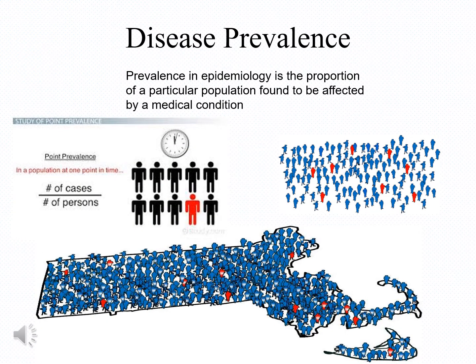I will now change gears and explain some important definitions necessary for you to understand the use of tumor markers. One attribute is called disease prevalence, and in epidemiology, prevalence is defined as a proportion of a particular population found to be affected by a medical condition.